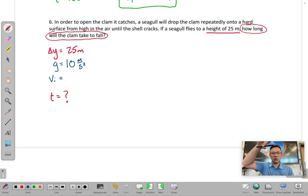And then the other thing that we need to list here would be the initial velocity of the clam. Any object that's dropped from, at least in our problems, is going to be dropped from rest.